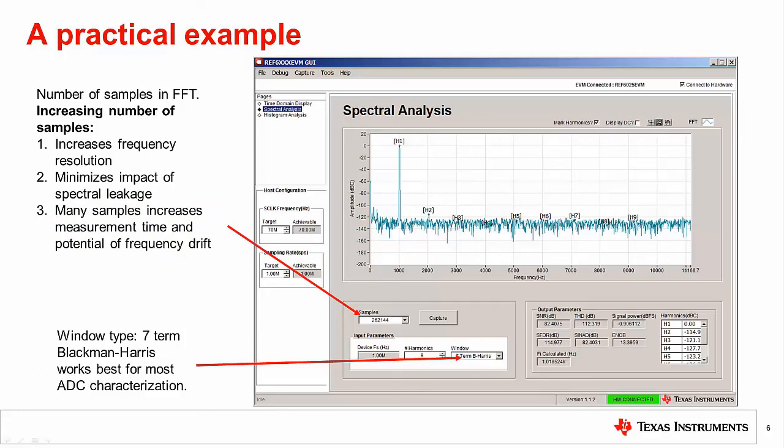However, this number may be different depending on the device and the test equipment used. Also, notice that the type of window can be adjusted. In general, the seven term Blackman-Harris is the best choice.